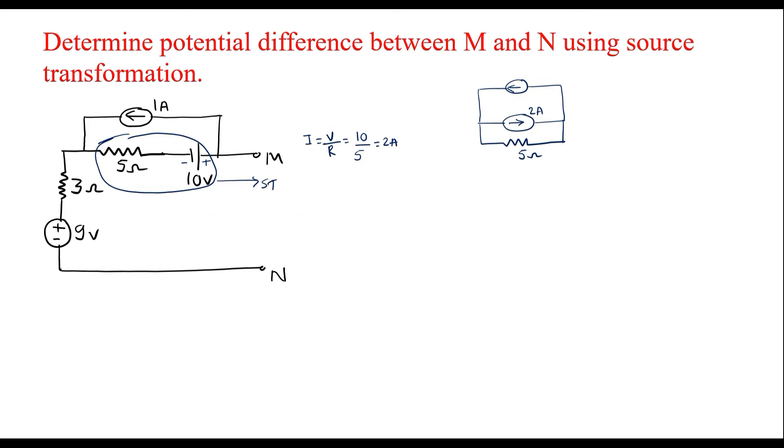The remaining resistor and voltage source is connected as it is. This is M terminal and this is N terminal. Here this is 9 volt and this is 3 ohm. The magnitude of this is 1 amp.